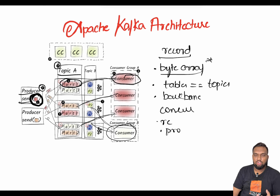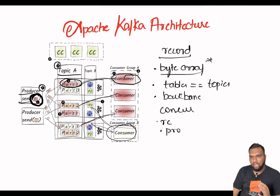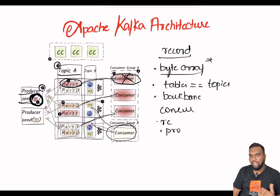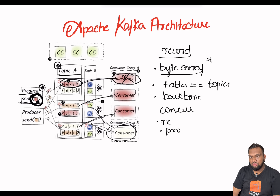Multiple consumers can be grouped together into consumer groups. Consumer groups allow parallel processing and scalable message consumption by dividing partitions and messages among the consumers. If one consumer fails for any reason, the others in the group take over its tasks, ensuring fault tolerance.